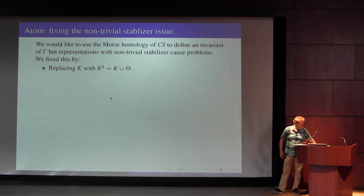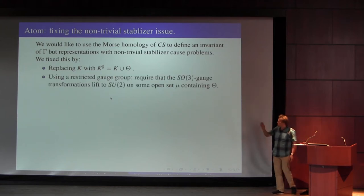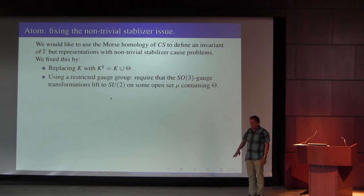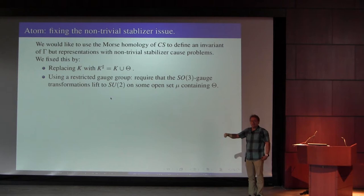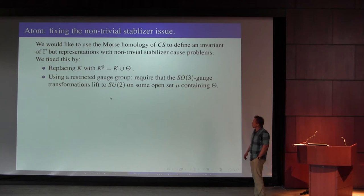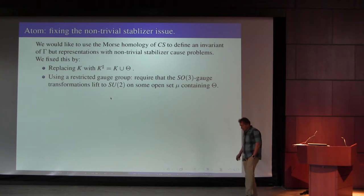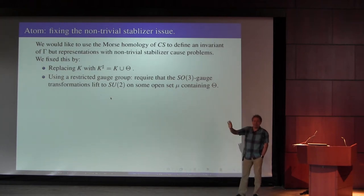The reason that's a good thing to do is that the theta graph, as we already saw, has — up to conjugacy — actually a unique representation into SO(3). That representation has its image as a copy of the Klein four-group. Unfortunately, as a representation in SO(3), it has a stabilizer because the normalizer of the Klein four-group sitting inside SO(3) is the Klein four-group itself — it's abelian, so it's normal.